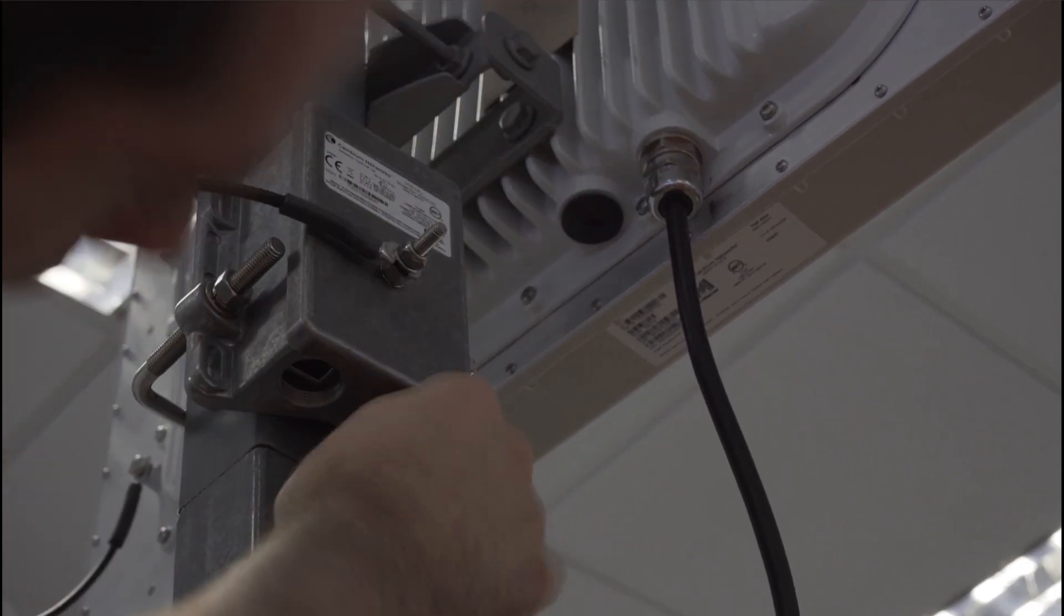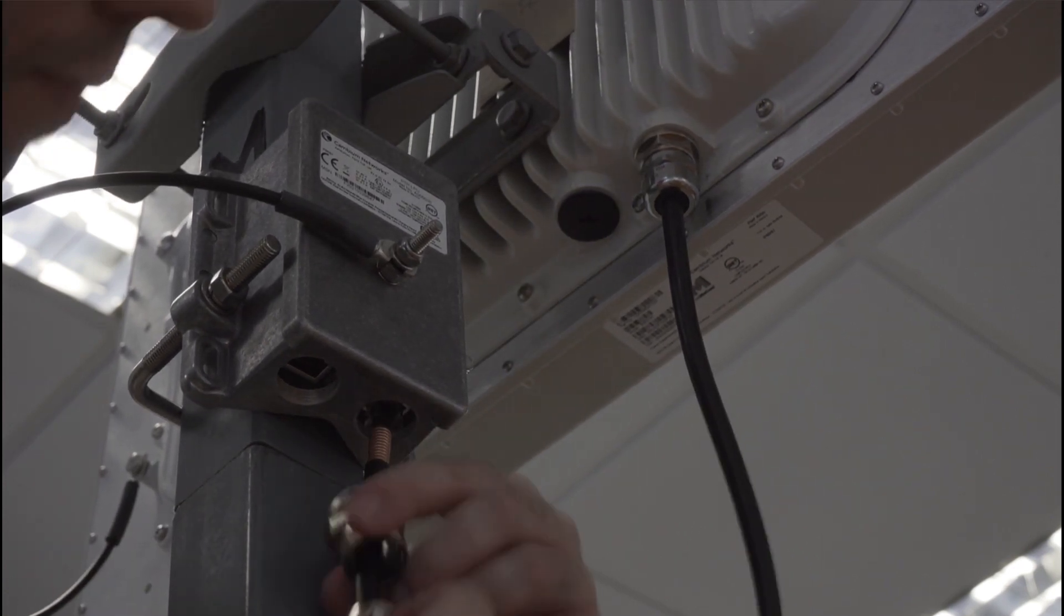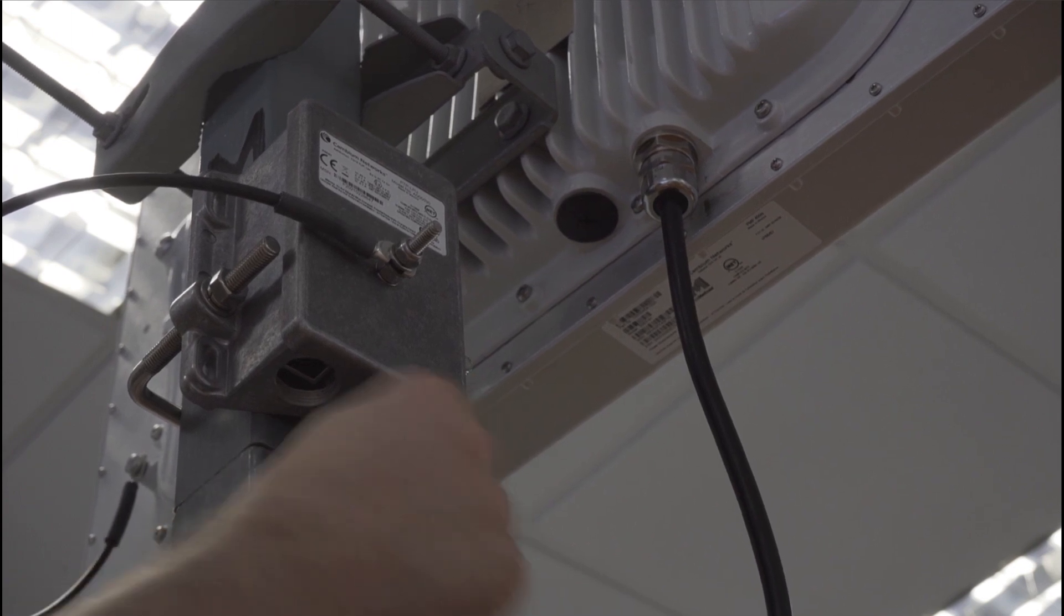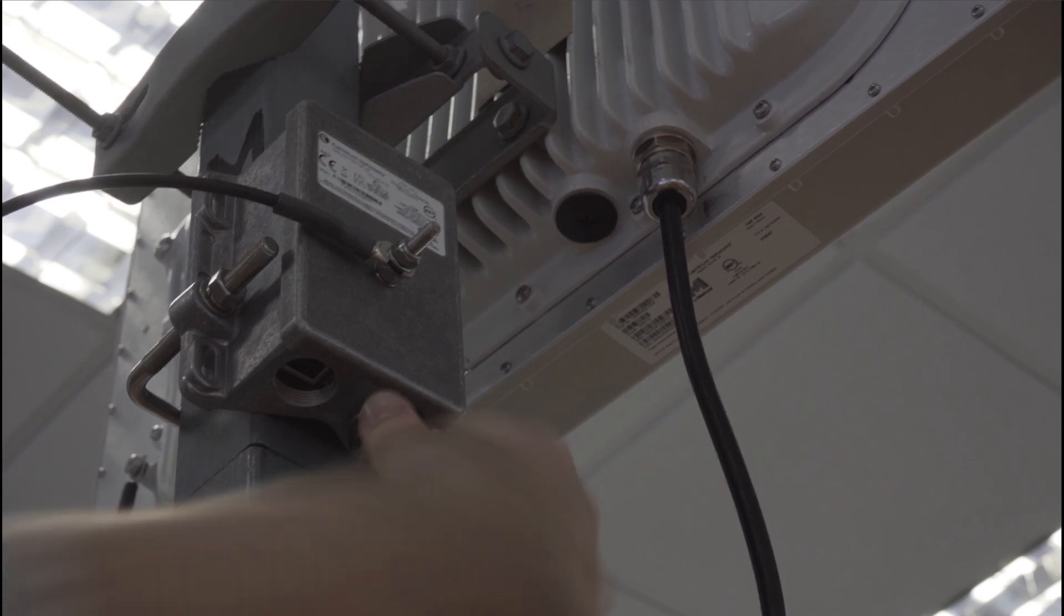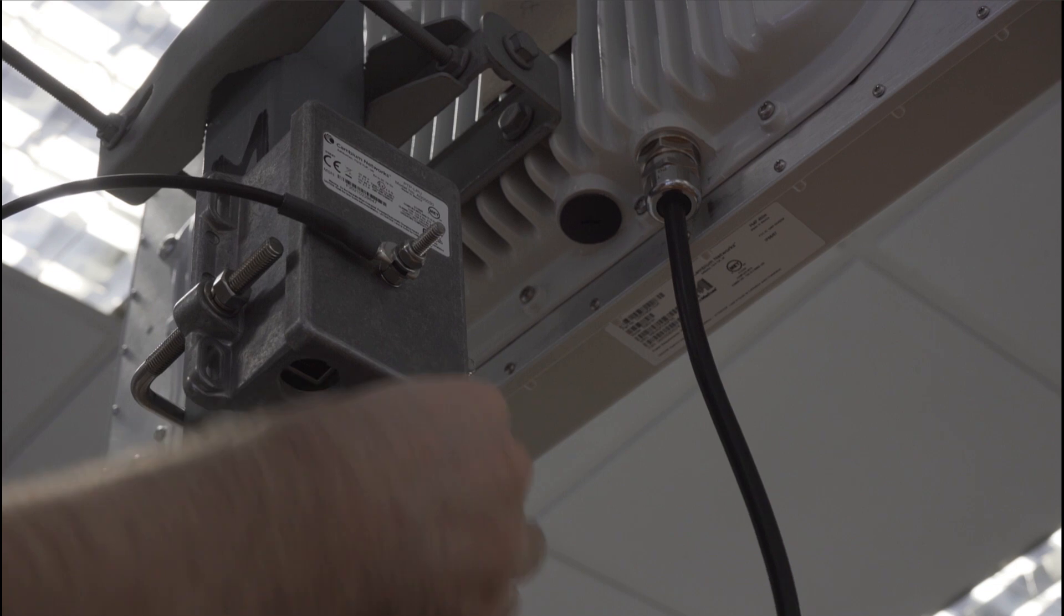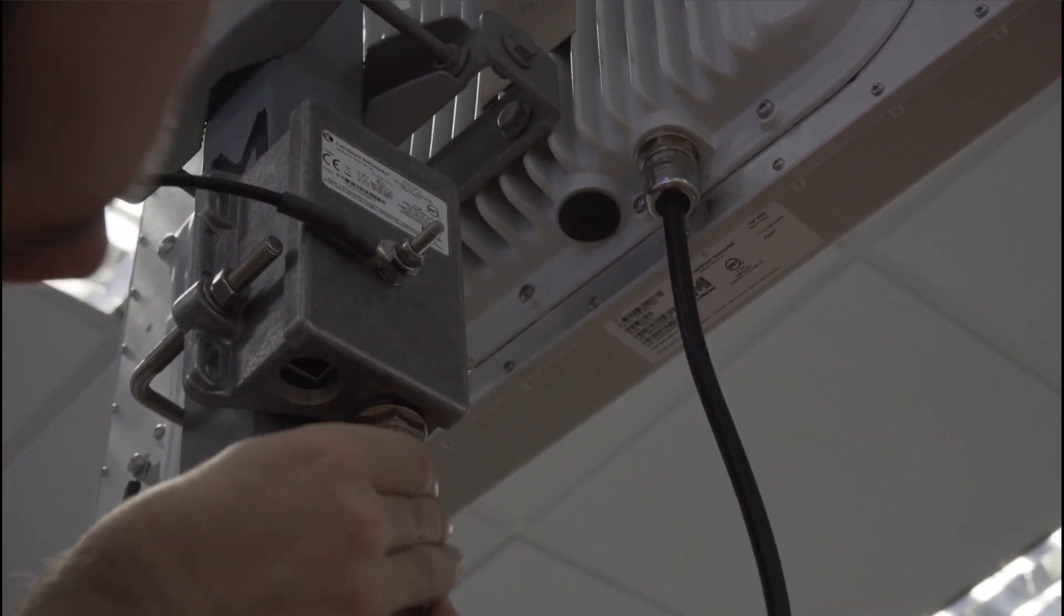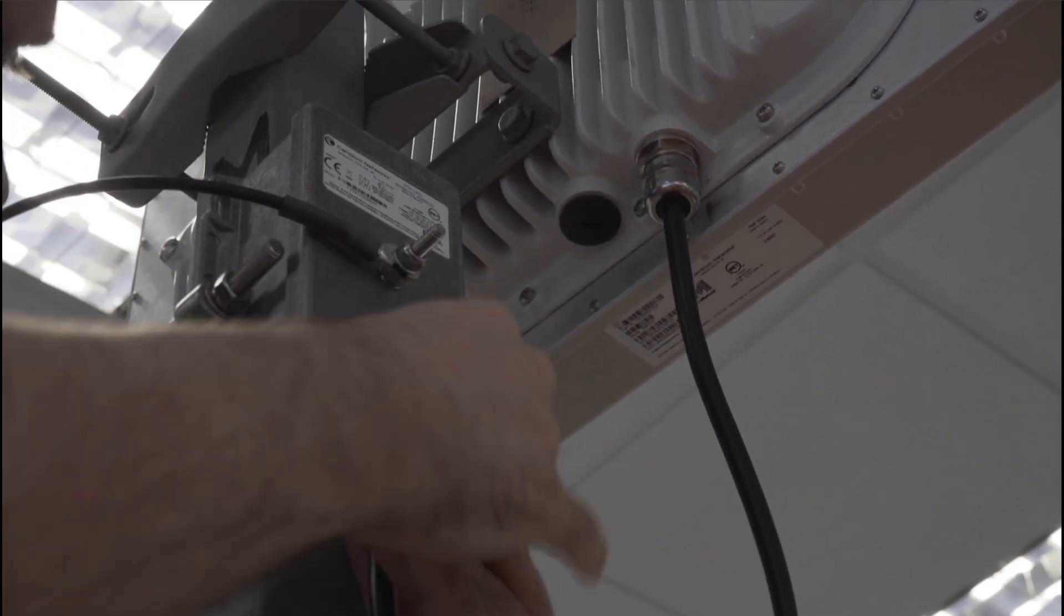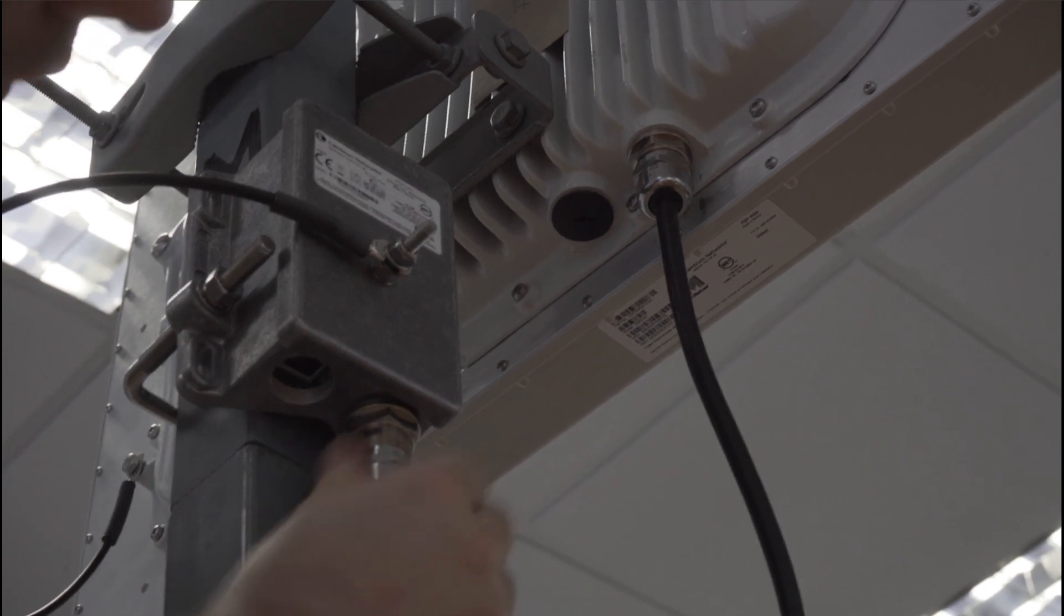Insert your RJ45. Partially screw in the base of the gland, and push the insert in and hold in place with the cap.